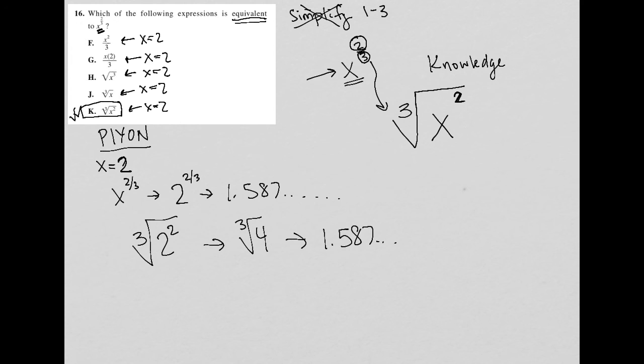Which means we further confirm that choice K is the right answer. And that also means when you go through F, G, H, and J with your calculators, none of these choices will give you 1.587.